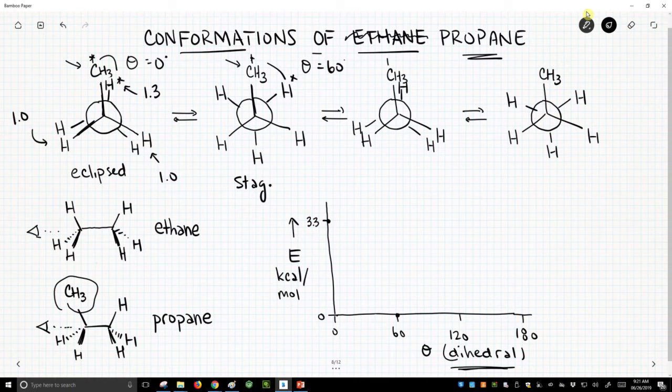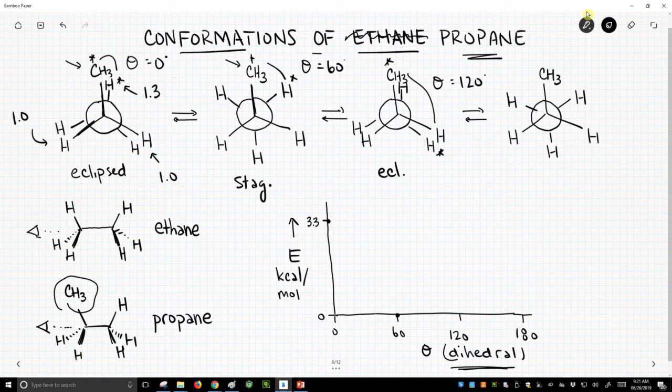Now let's rotate another 60 degrees. I'll flag the methyl, and I'll flag this hydrogen on the back carbon, and now we've opened up to a dihedral of 120, and this again is an eclipsed conformation. And we go back up to this same 3.3 values. We have a hydrogen-hydrogen eclipse interaction, that's 1, hydrogen-hydrogen, that's 1, and then this is again 1.3. So we go back up to 3.3.